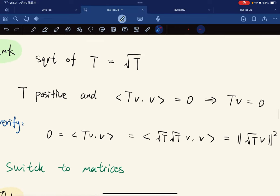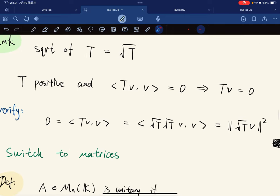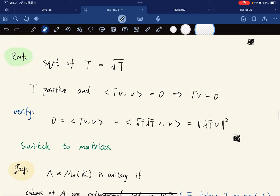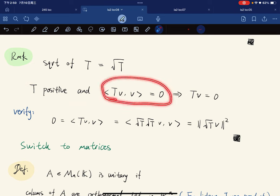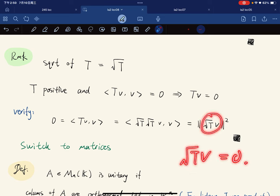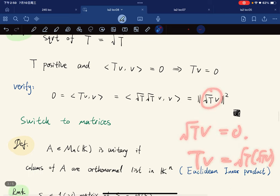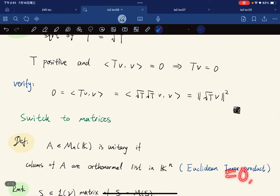We can define the unique square root of T to be this symbol, and T is positive. If T is positive and <Tv,v> equals zero, this implies Tv equals zero, because this equals <√T v, √T v> which equals ||√T v||². So √T v is zero, which means Tv equals zero.